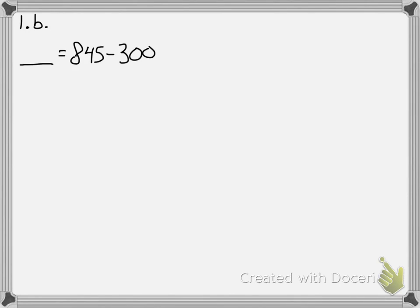For problem B, they're trying to fool you a little bit because the equal sign has been moved. But this is basically the exact same thing — it's the same as saying 845 minus 300 equals blank. Don't be fooled by the way they switch this around. I'm going to use a place value chart again.